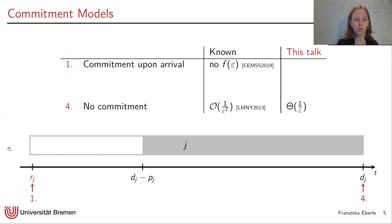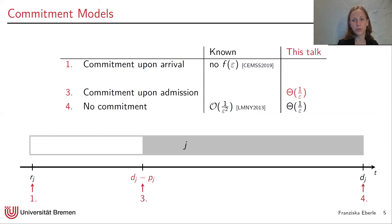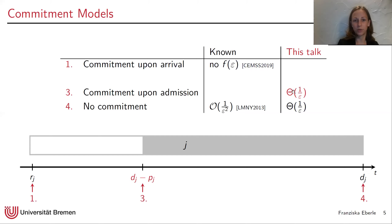From the job's point of view, it is best if commitment happens immediately upon arrival at its release date. In a previous paper, we showed there is no deterministic nor randomized online algorithm that achieves a competitive ratio depending only on ε in this model, so it is out of the question. One model in between is commitment upon admission: once the scheduler starts a job, it has to guarantee that it finishes on time — relevant for things like copying databases where we should complete once we start. Surprisingly, we achieve the same competitive ratio as without commitment.